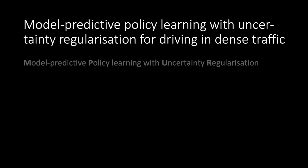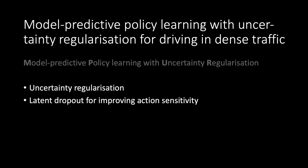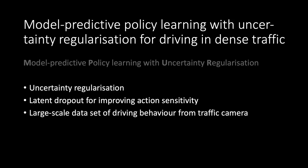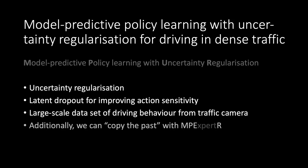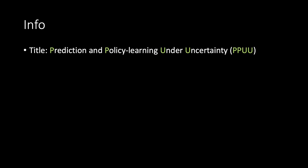I promised you we would understand every term in the title. The main contributions are: the uncertainty regularization, the latent dropout for improving action sensitivity, the large-scale dataset of driving behavior from traffic cameras, and additionally the ability to copy the past by using the MPC expert regularization — which is basically a model-based imitation learning approach. We've been talking about prediction and policy learning under uncertainty. The speaker is me, Alfredo Canziani, and you can find me on Twitter under AlfCNZ.